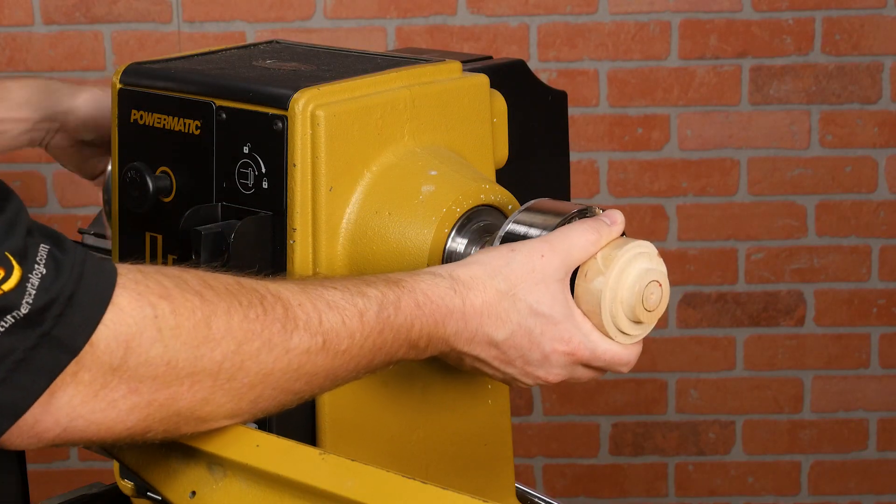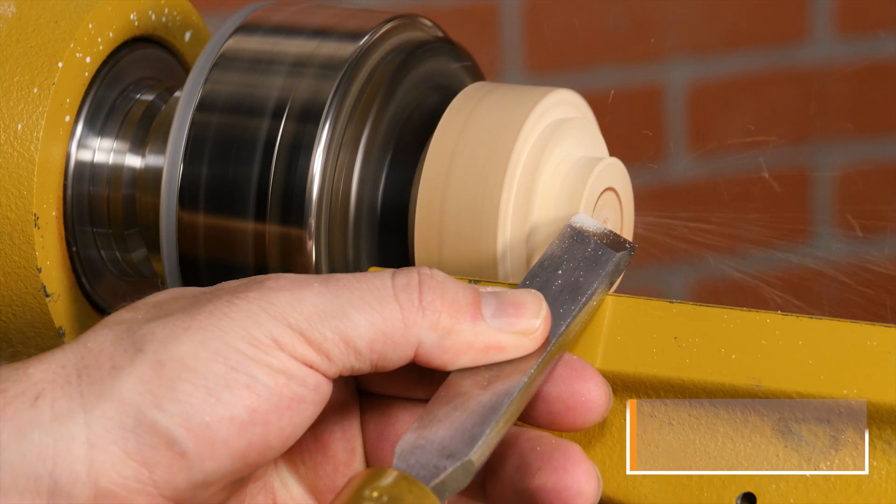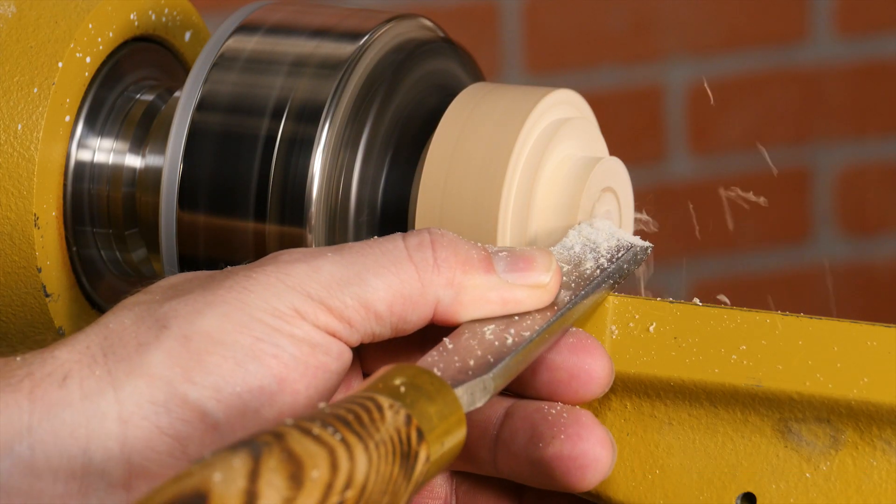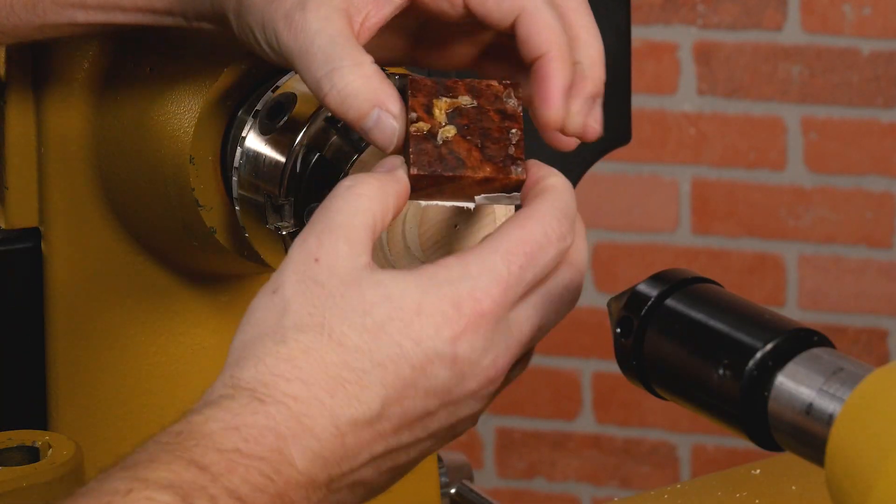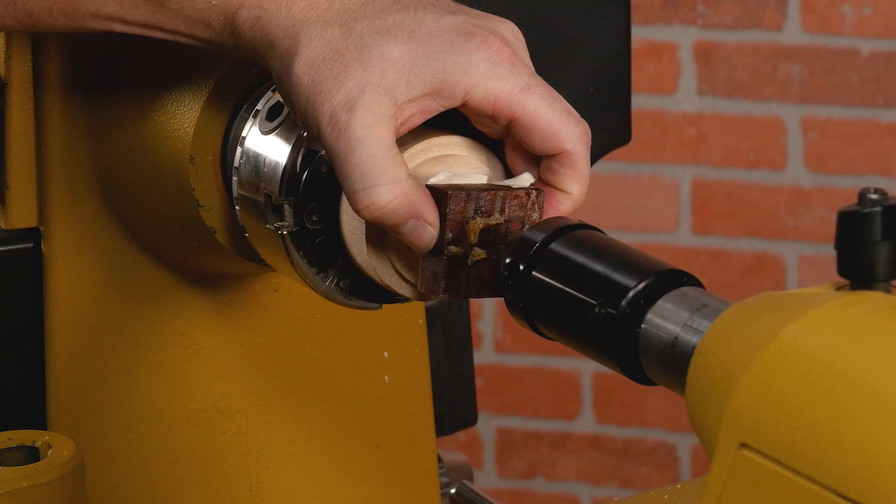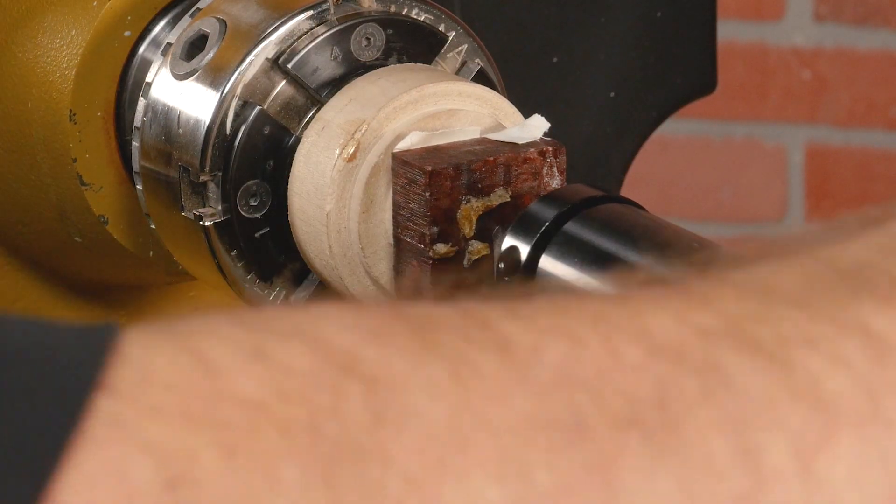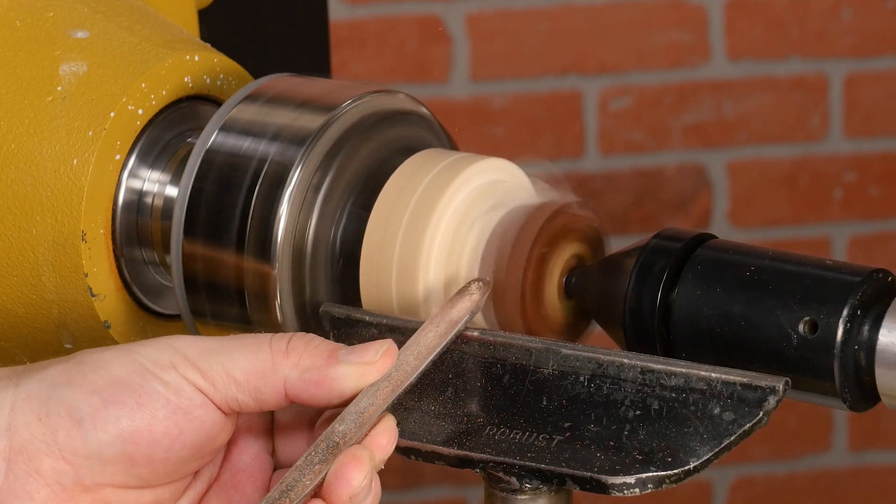Next, mount a waste block in your chuck and use a skew to true the face. This will be our jig for drilling and rough turning the ring core. Now, remove the backing from the tape and line up the point of a revolving center with your center mark on the ring blank. Advance the tailstock until the blank is mounted between the center and the waste block.